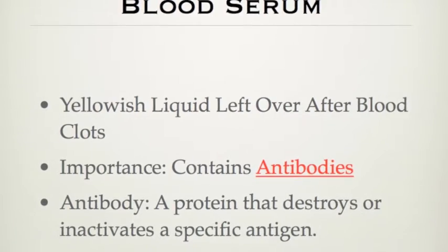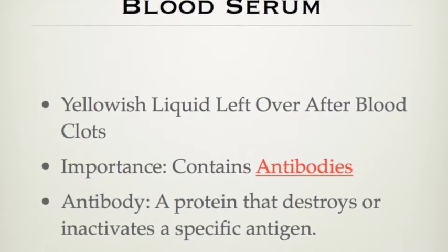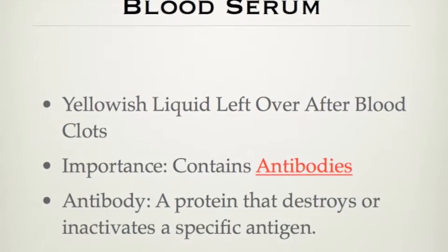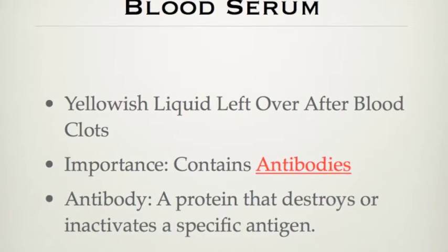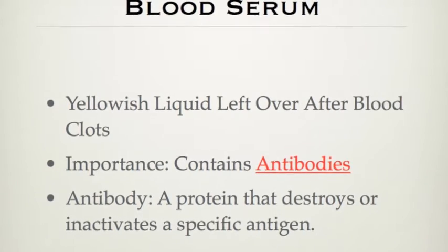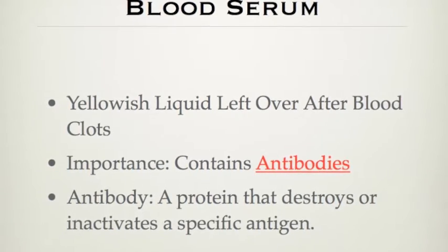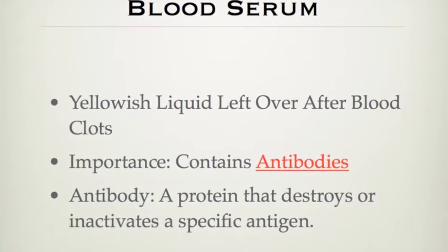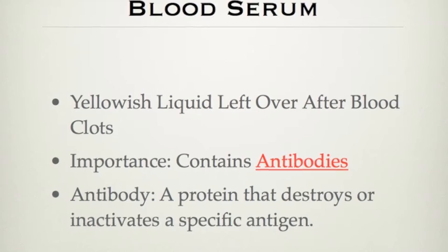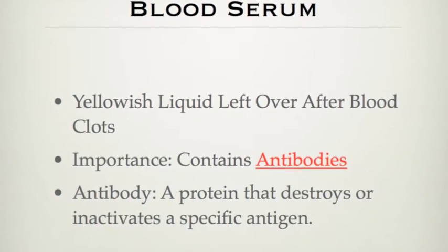The blood serum is the yellowish liquid left over after blood clots. This is important because it contains the antibodies. Antibodies are the proteins that destroy or inactivate a specific antigen.